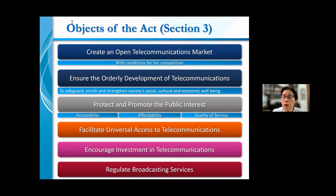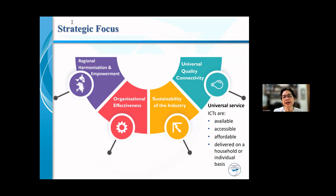Also among our objectives: to facilitate universal access to telecommunications, to encourage investment in telecommunications, and to regulate the broadcasting sector. Our strategic focus comprises four different areas: regional harmonization and empowerment, organizational effectiveness, sustainability of the industry, and, very importantly to our discussion today, universal quality connectivity. We consider universal service to be the condition in which ICTs are available, accessible, affordable, and delivered on a household or individual basis.